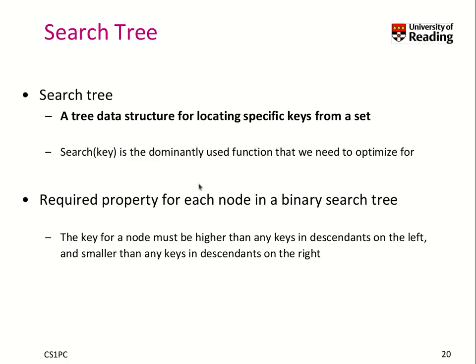Trees can also be used for search very conveniently. They are so-called search trees, a data structure for locating specific keys from a set. With such a data structure, the search operation — where you search for a specific key — is the dominantly used function we try to optimize for. When we create such a tree efficiently, we use a property: the key for a node must be higher than any key in the descendants on the left, but smaller than any keys in the descendants on the right.